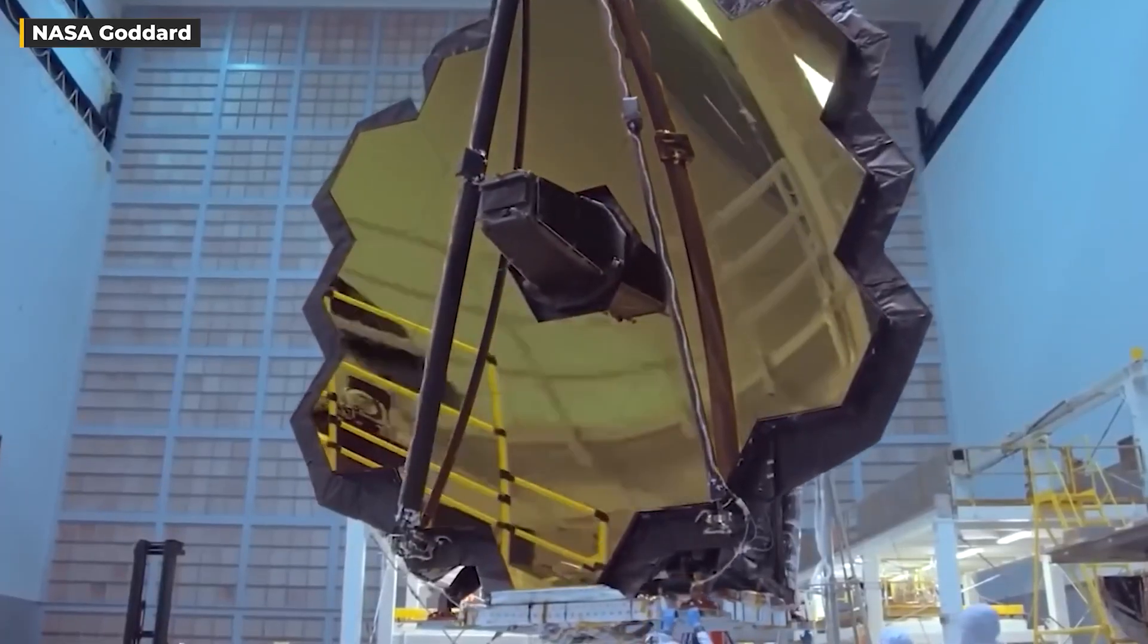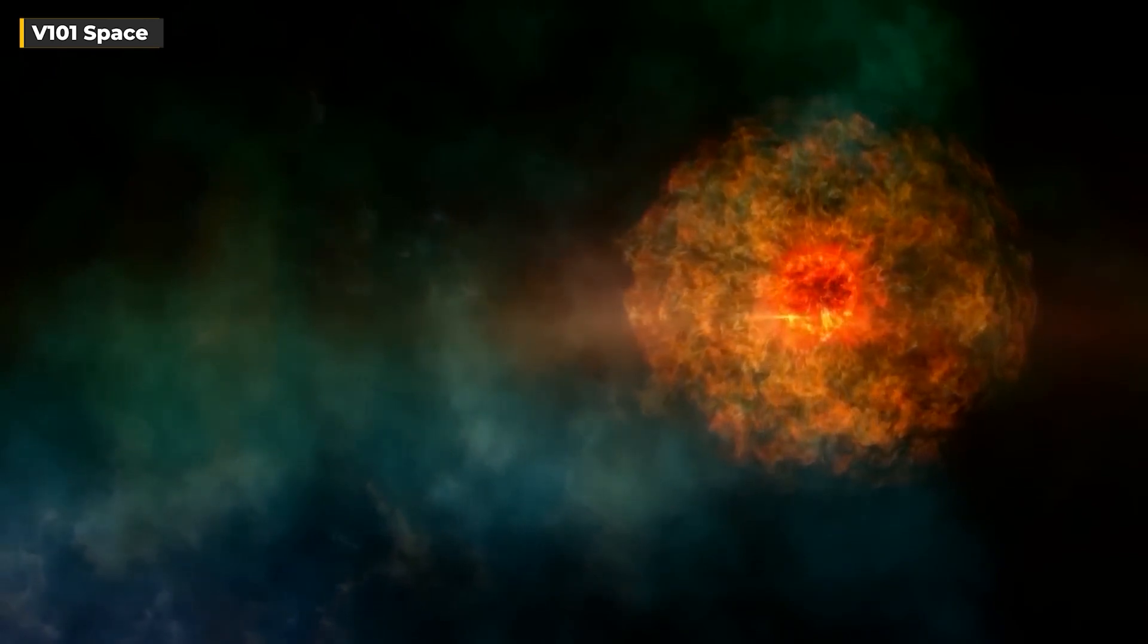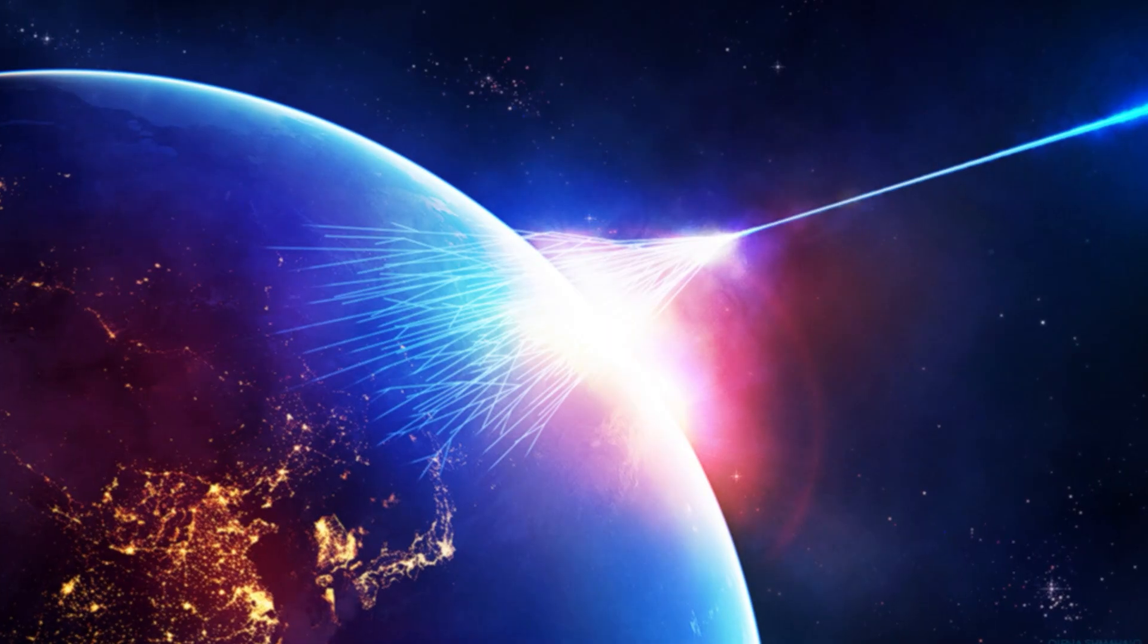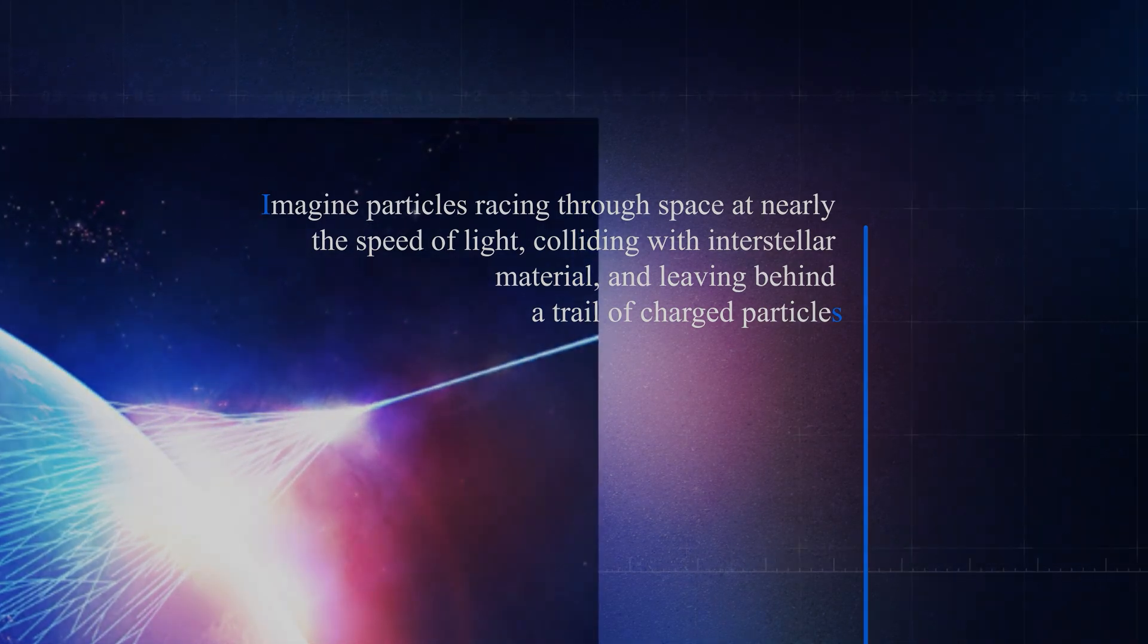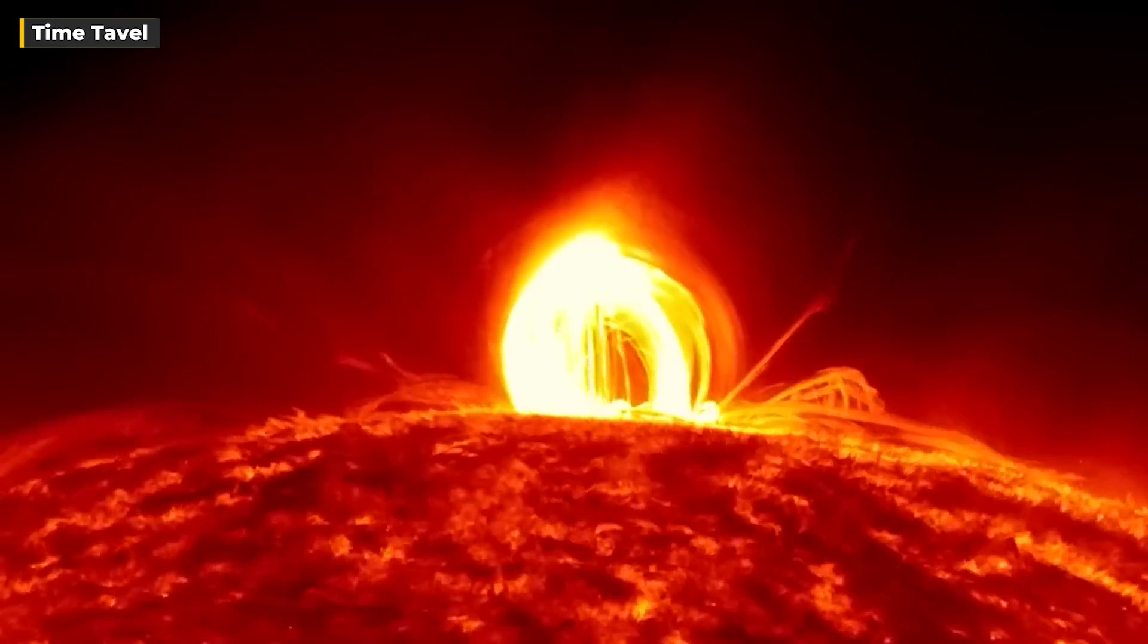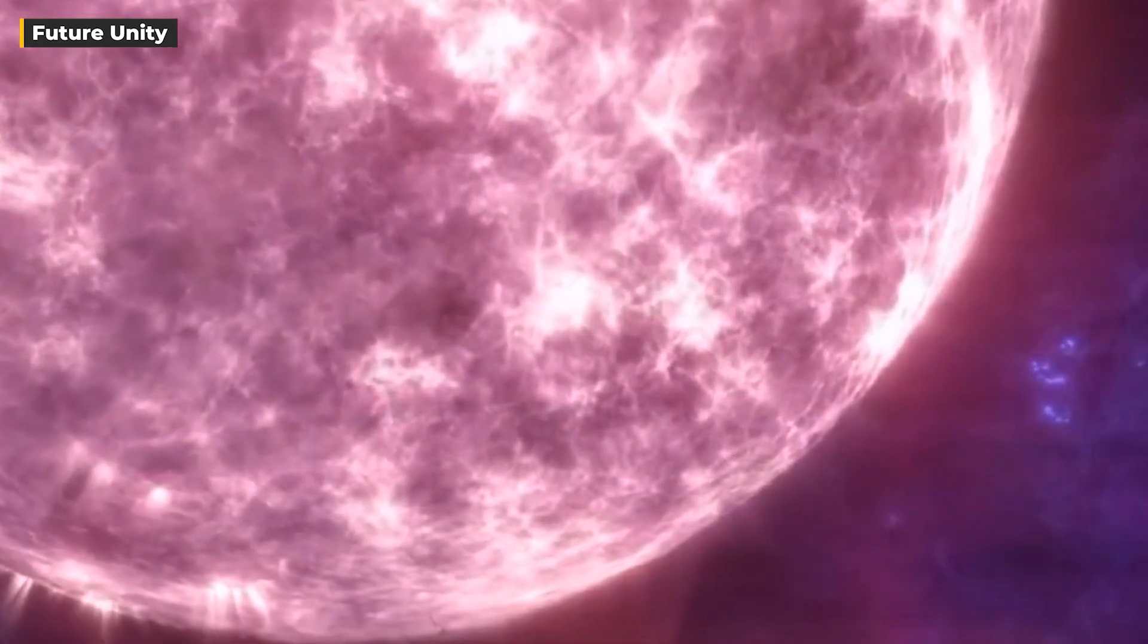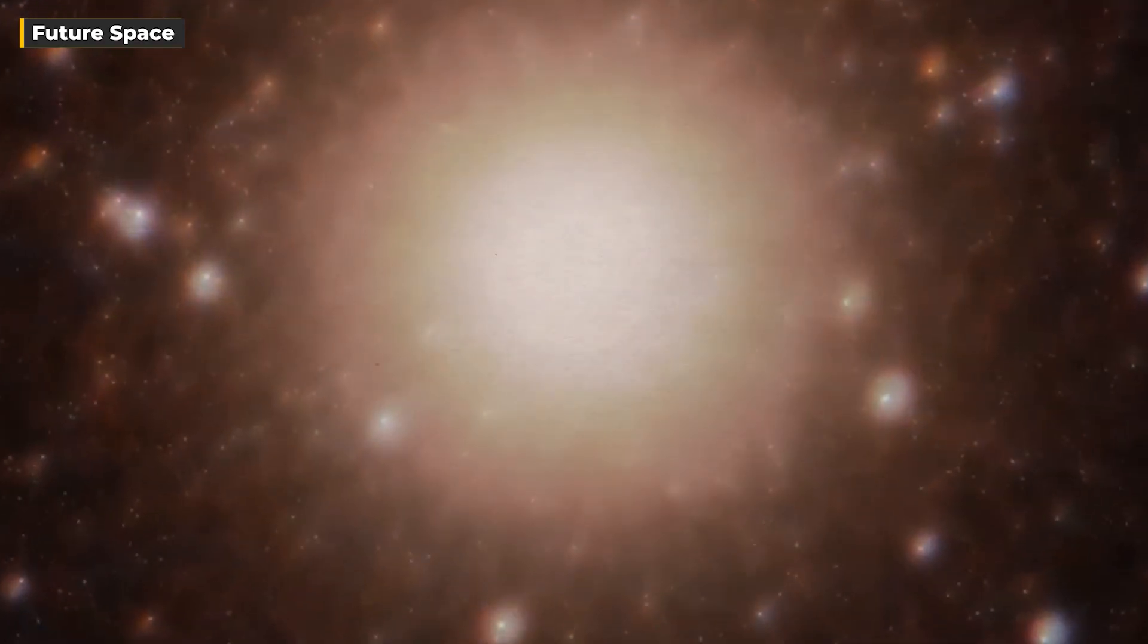Astronomers worldwide ponder the Earth's response to this spectacle. Some speculate the explosion could release cosmic rays, high-energy particles traversing space. The cosmos, a theater of enigmas, keeps us captivated with its unfolding dramas. Imagine particles racing through space at nearly the speed of light, colliding with interstellar material, and leaving behind a trail of charged particles. These cosmic rays upon approaching Earth could produce stunning auroras when they interact with our magnetosphere. But what does this mean for our planet? Fortunately, Betelgeuse is sufficiently distant that these cosmic rays would likely be diluted and absorbed by atmosphere, posing minimal risk to our biosphere. The explosion itself won't directly threaten Earth, but it will undoubtedly light up our skies, sparking discussions, research, and perhaps some concerns.